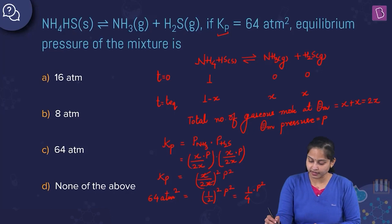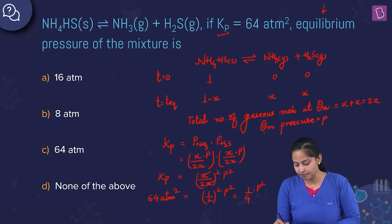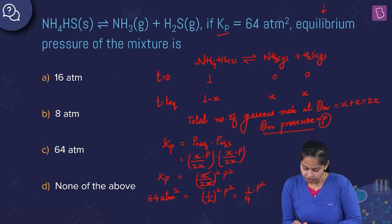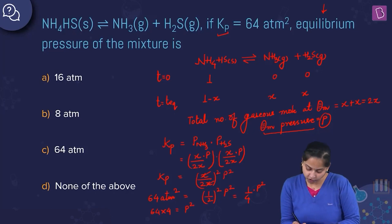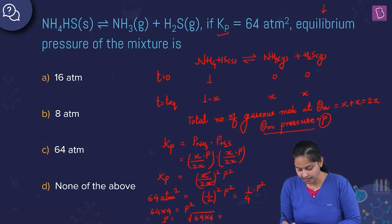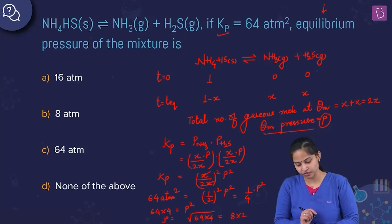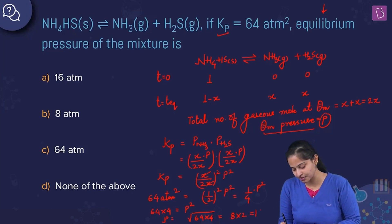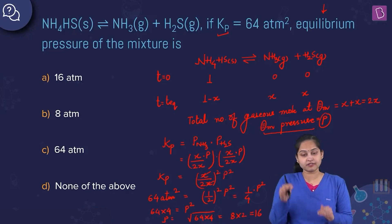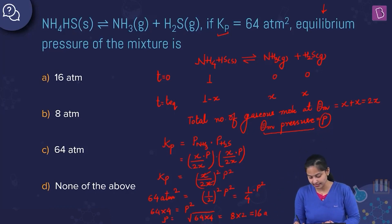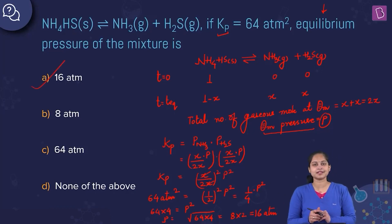Kp is given as 64 ATM squared, so 64 equals (1/4) P squared. Therefore P squared equals 64 times 4, and P equals the square root of 256. Root of 64 is 8 and root of 4 is 2, so P equals 8 times 2 equals 16 ATM. The equilibrium pressure of the mixture is 16 ATM, so option A is the right answer.